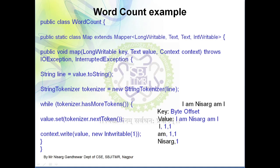Now the Reduce class takes the Mapper's output as input. We write public static class Reduce extends Reducer, which takes four arguments: Text, IntWritable for input and Text, IntWritable for output. The reduce function takes three variables: key of type Text, values of type Iterable<IntWritable> (a list), and context for writing output. We initialize a counter variable 'sum' to zero, then use a for loop to iterate over the list of values for each key, computing sum = sum + x.get() to count occurrences.